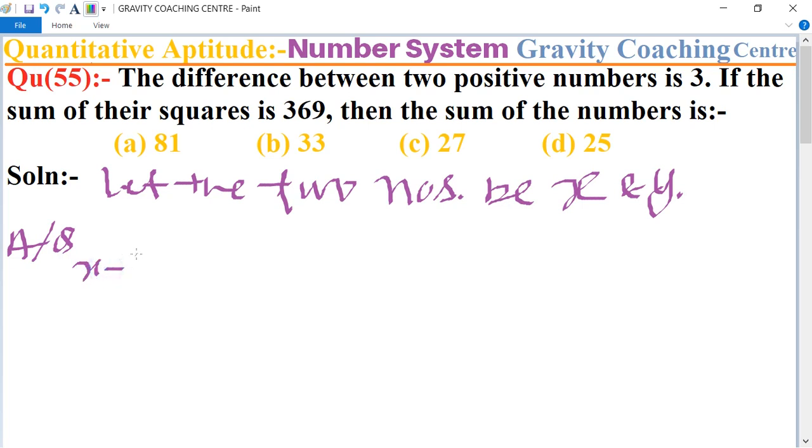Means x minus y equals 3. And if the sum of their squares, so x squared plus y squared equals 369.